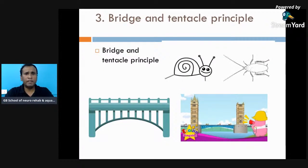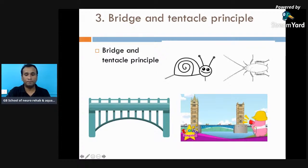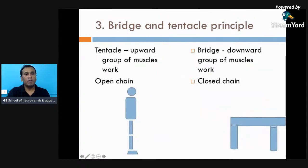The third principle is the bridge and tentacle principle. The tentacle principle refers to open chain — like an insect's tentacle — where the distal end is free. The bridge is a closed chain supported from below. We will apply this bridge and tentacle concept to understand muscle action in gait.